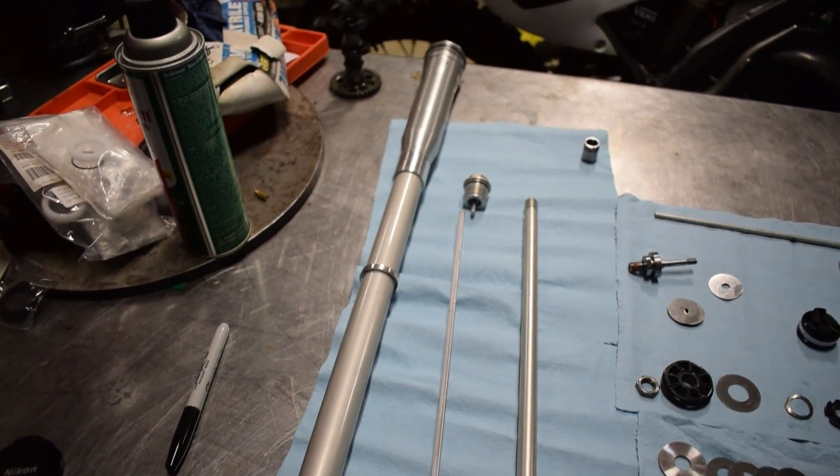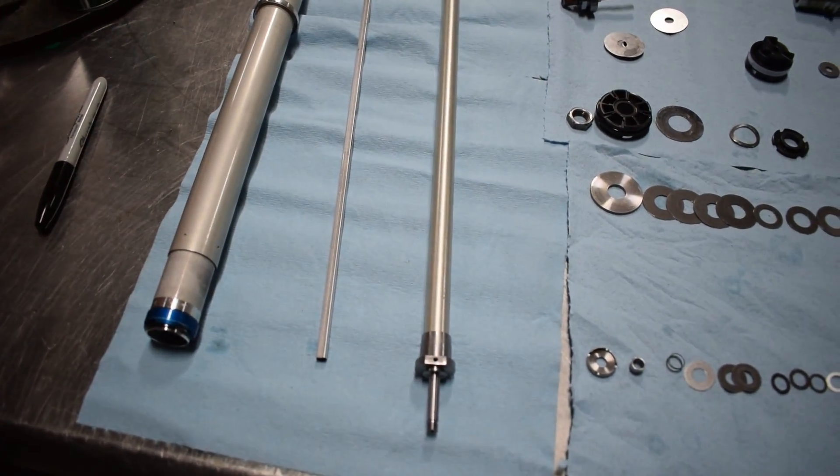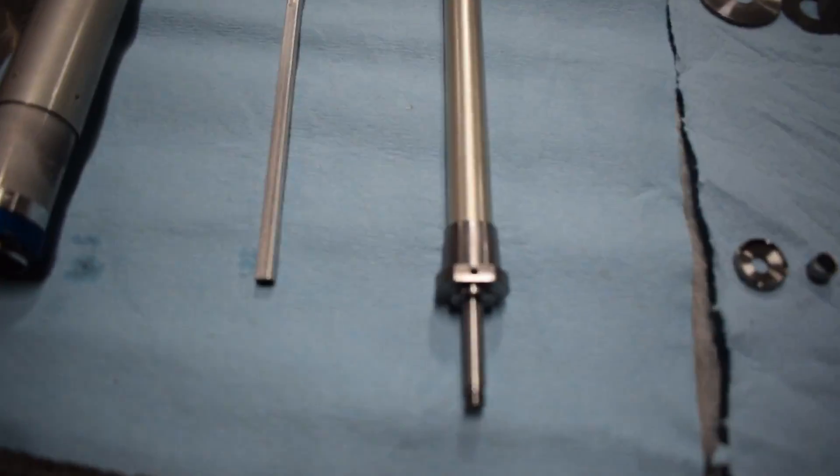There's a cartridge over there, that long piece. Here's the cartridge damping rod. This is where your mid-valve goes, right here.